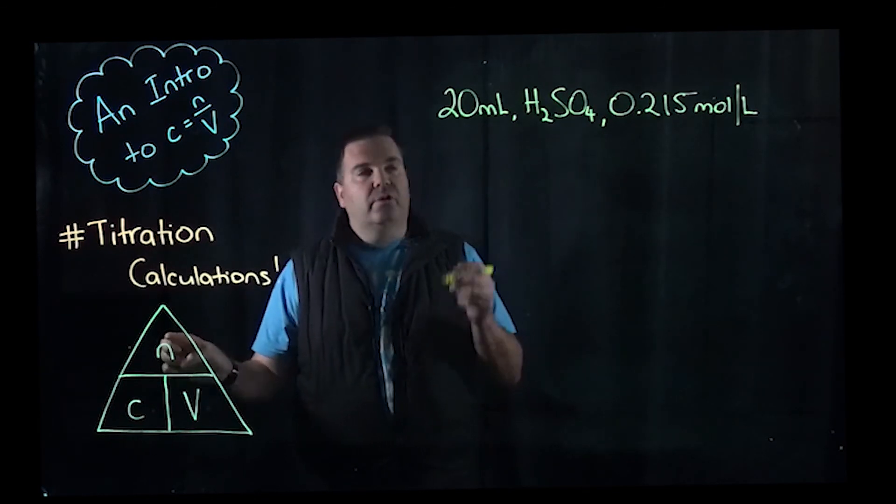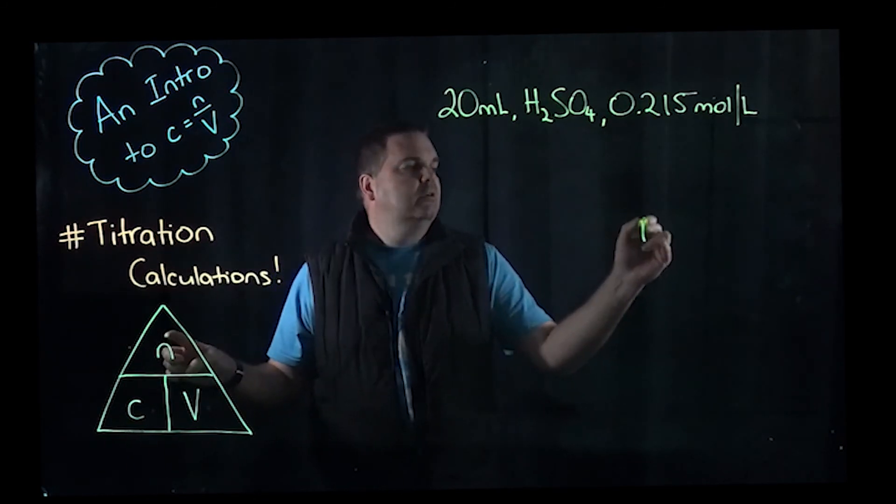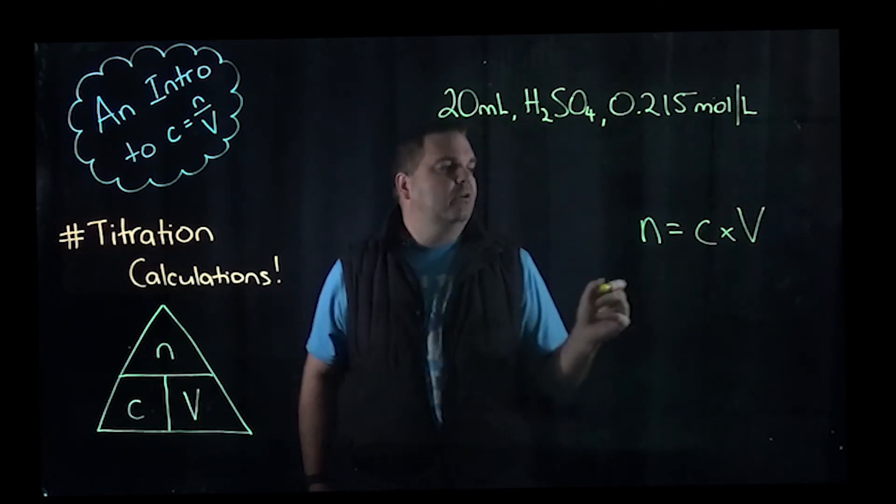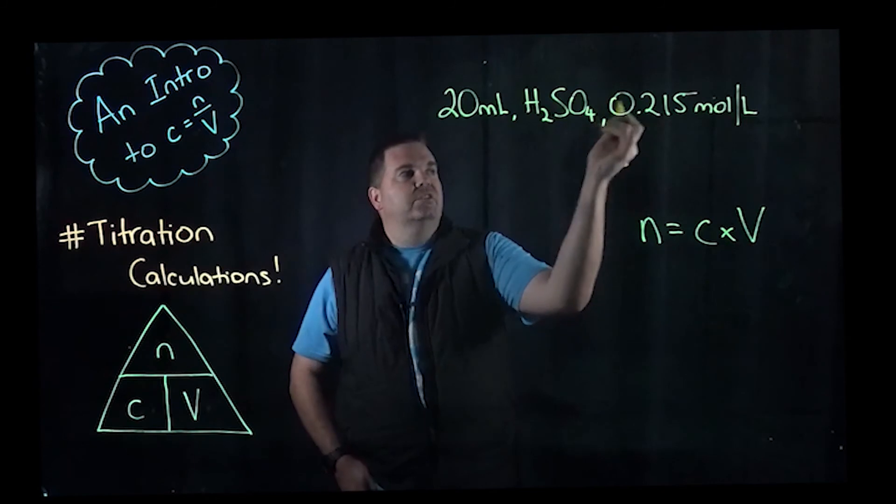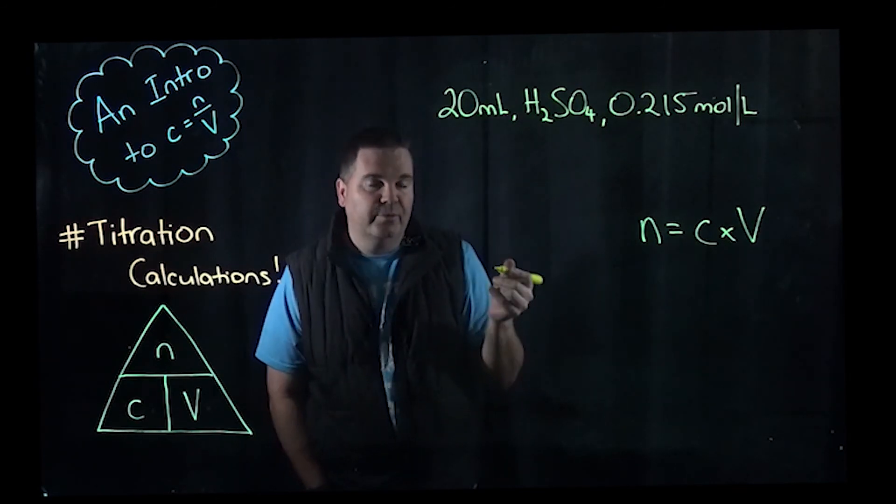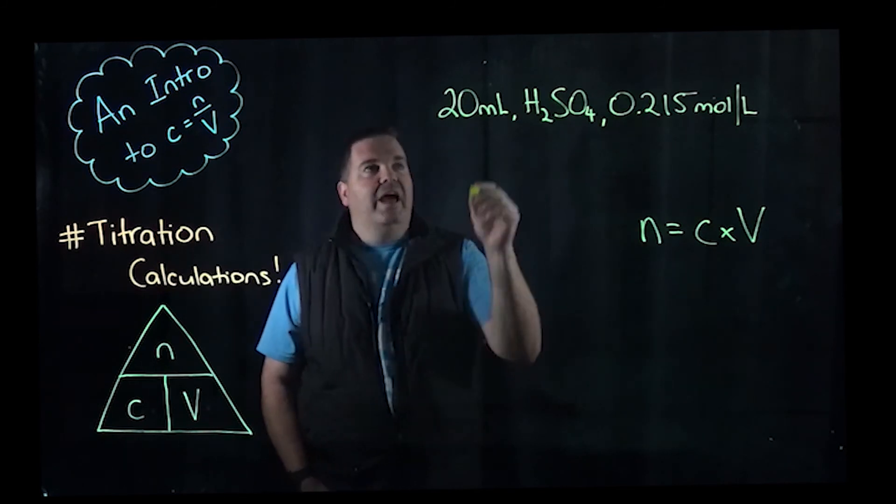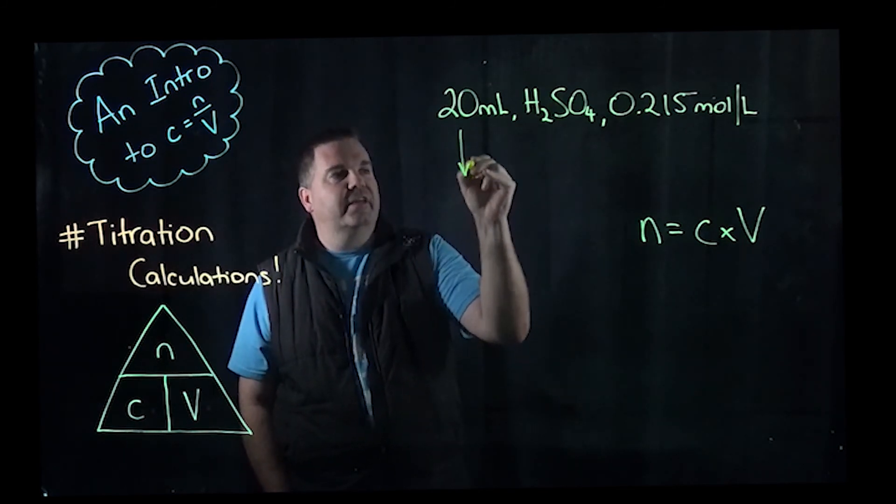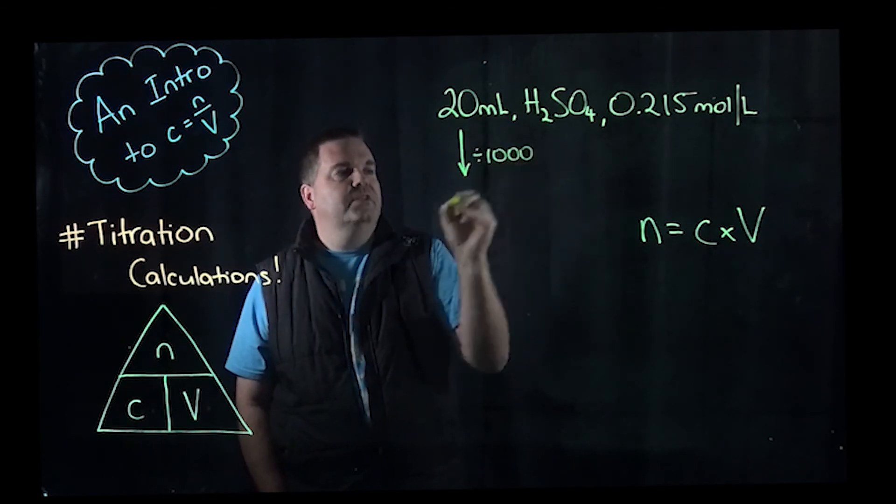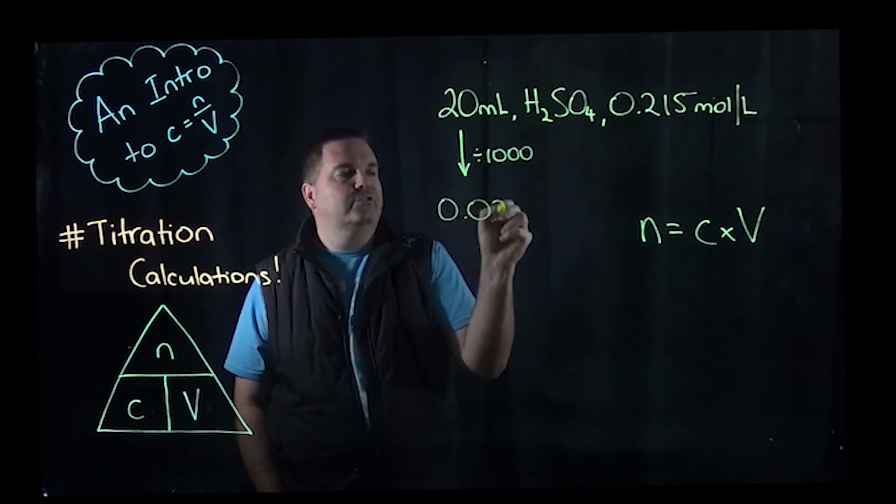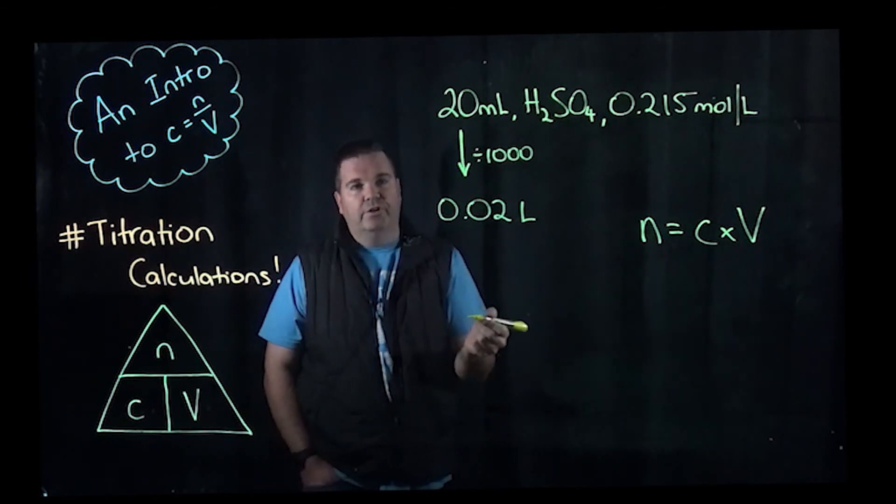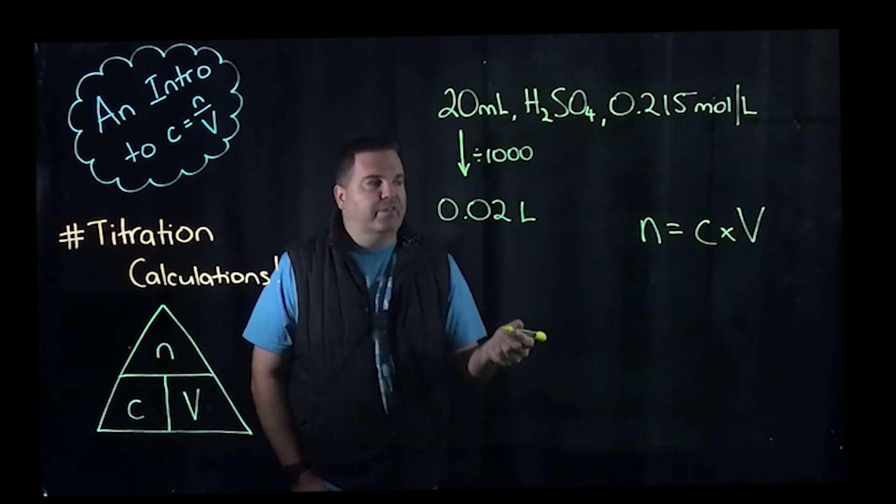So again, using our triangle, number of moles equals, this time they're next to each other, so it's C times V. So we know the concentration, it's 0.215. We know the volume, that's 20 mils. The key thing that a lot of people rush into is they just do the calculation and forget that you've got to convert that into litres. So you've got to divide it by a thousand to get 0.02 litres. Then you can do your calculations. If you don't do that conversion, you're going to be out by a factor of a thousand.